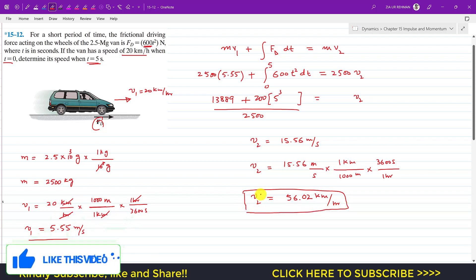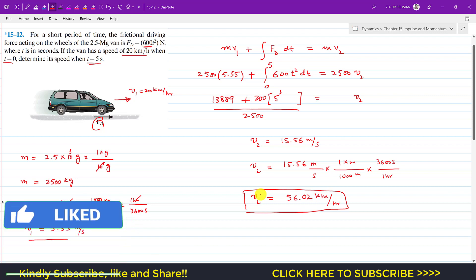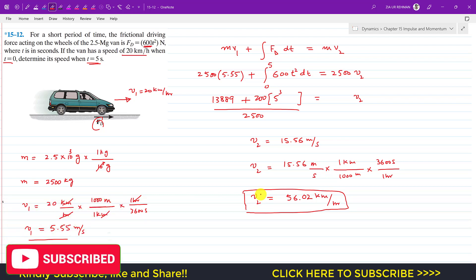The velocity of the car is 56.02 km/h. So this is the solution of this particular problem. I hope this will help you in your learning. Do subscribe my channel if you haven't done it yet.